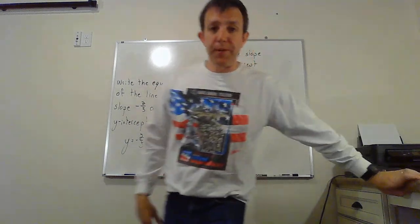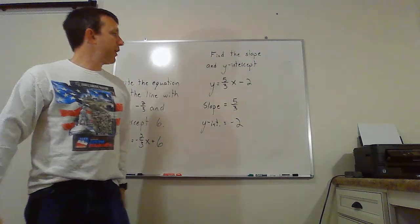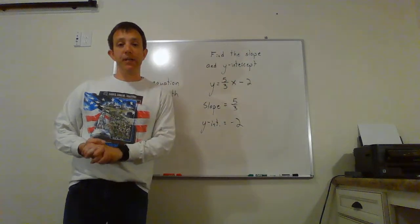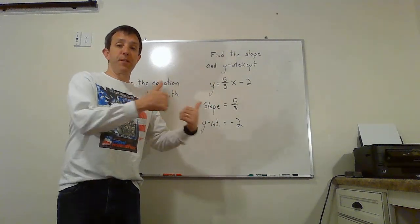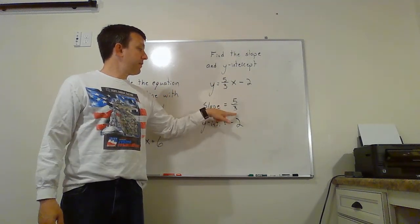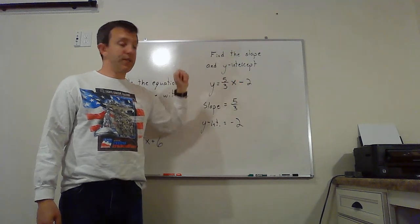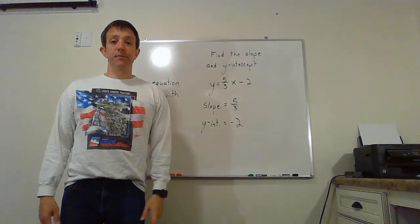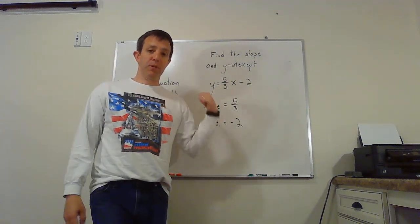For my second example, find the slope and y-intercept. Except this time I have an equation. I just want you to pull out the slope and the y-intercept. Again, we know y is equal to mx plus b. m is 5 thirds. That's my slope. b is this time a minus 2. Watch out for the minus sign. So my y-intercept is negative 2. Done! One more example and you'll have everything you need to work with this.